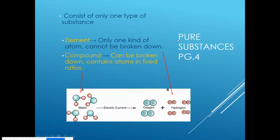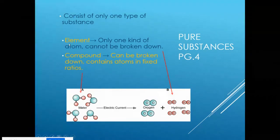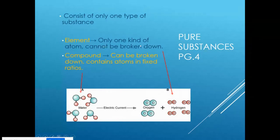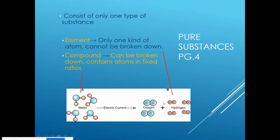A pure substance consists of only one type of substance. Further, we have elements — only one kind of atom, which cannot be broken down any further. Building from the element, we have a compound, which contains atoms in fixed ratios and can be broken down. Oxygen or hydrogen alone would be an element. If we put them together as H2O, that becomes a compound because we have two different elements that can be separated.